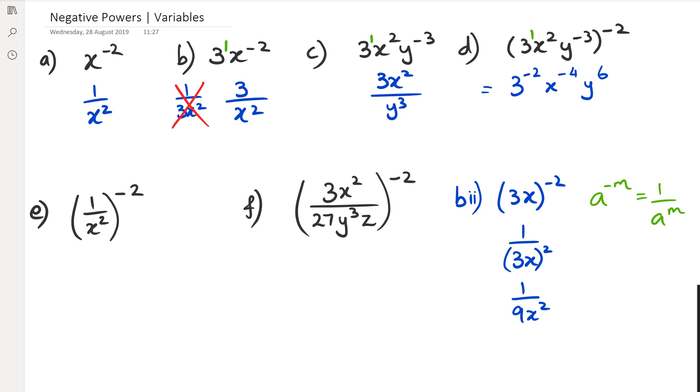So what I can then say is because 3 has a negative power, it goes to the denominator. x has a negative power, it goes to the denominator. y is a positive power, which is going to stay at the top. So I'm going to get y to the power of 6 over 3 squared x to the power of 4. But of course, 3 squared, I know what it is, which is 9. So I'm going to rewrite this as y to the power of 6 over 9x to the power of 4.